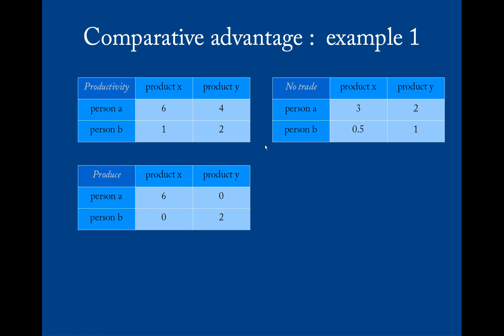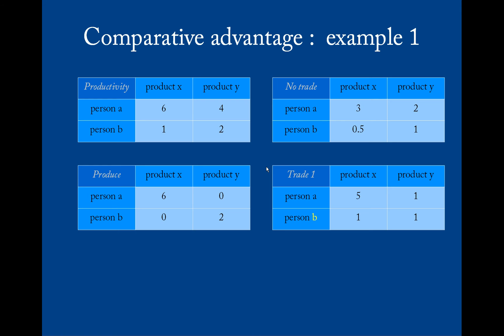Now let's see what would happen if they both produced what they are best at and then engaged in trade. Person A produces six of X and person B produces two of Y. Then they engage in trade - for every one X, person A gets from person B one Y and vice versa. Now person B with one trade has one Y and one X, which is better than he would have had if he had produced all by himself.